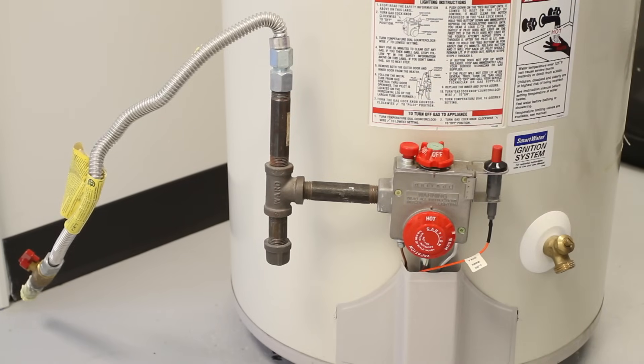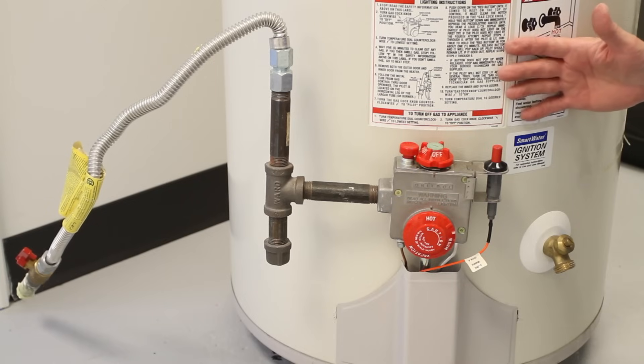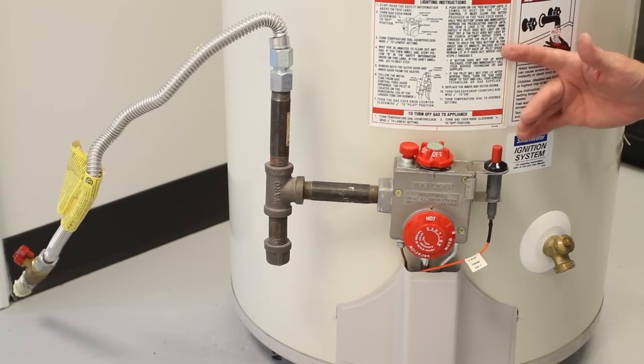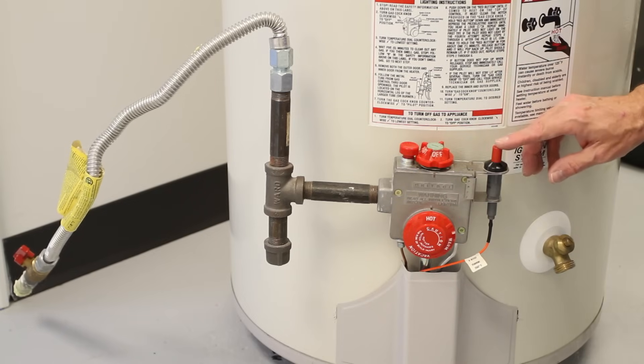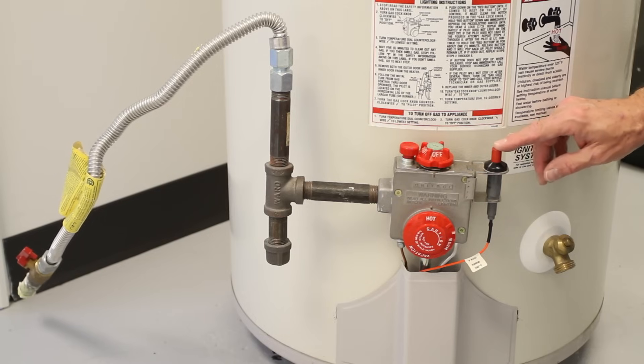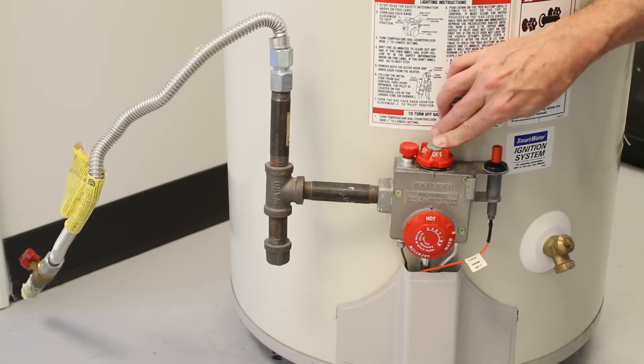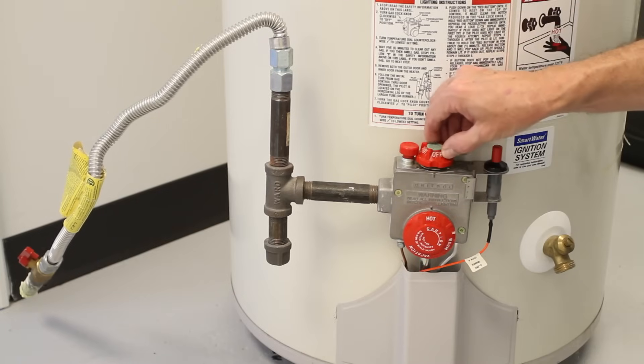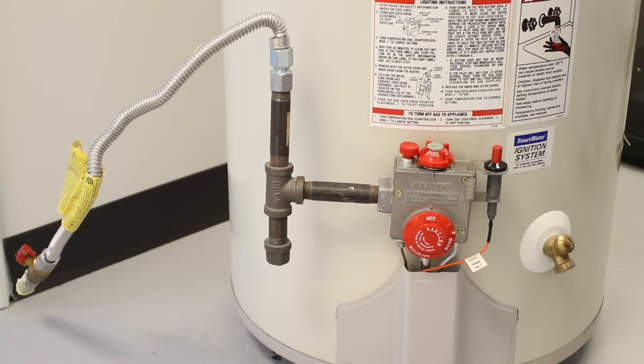If you were to come home and have lukewarm or cold water in your hot water heater, it's probably because the pilot light went out during the day. So you want to set this off for a few minutes, let any gas in the area dissipate. Then turn this to where it says pilot.